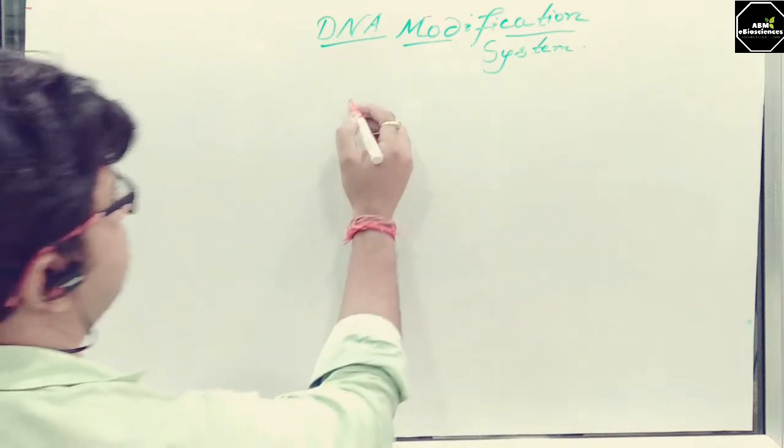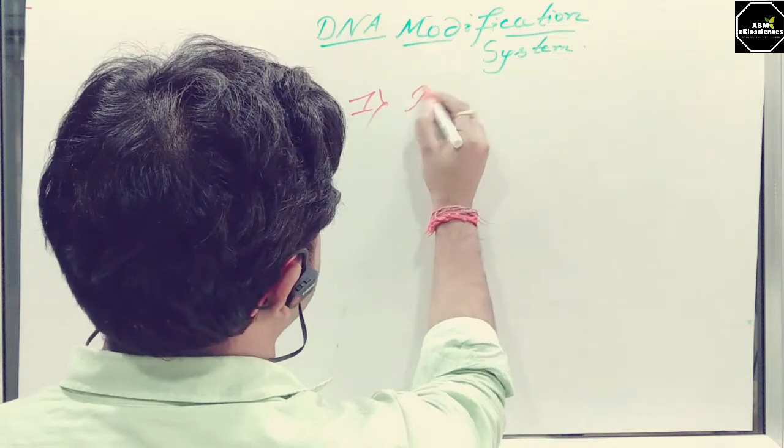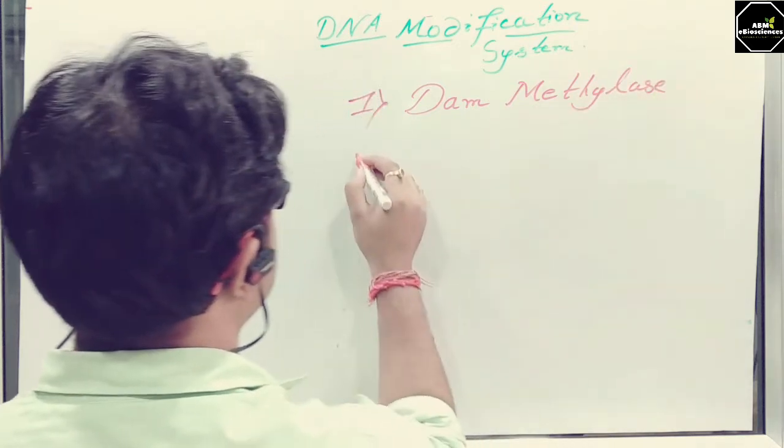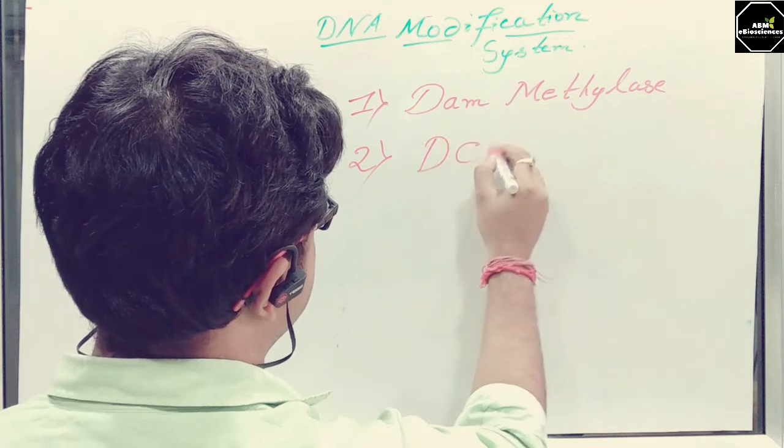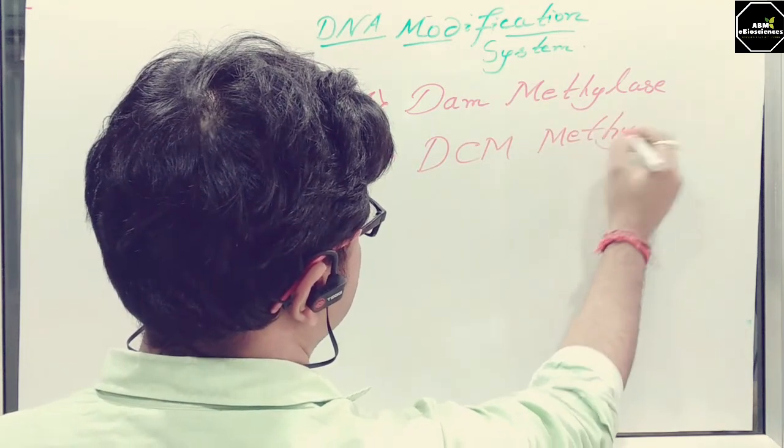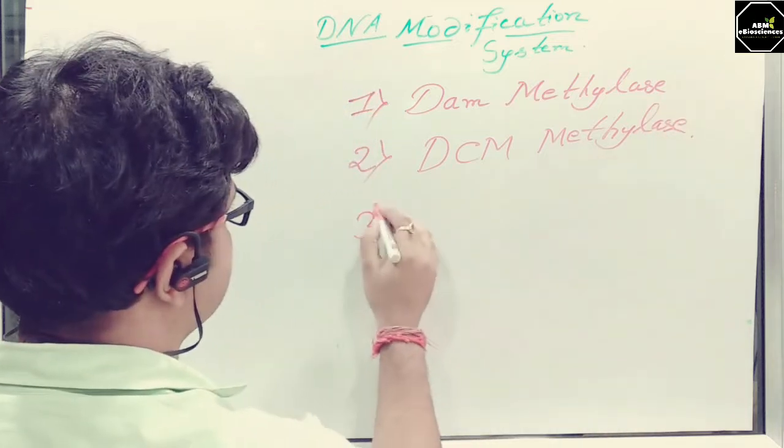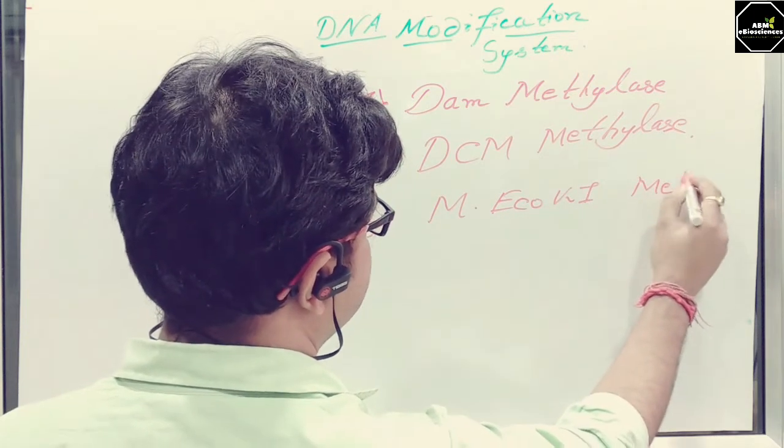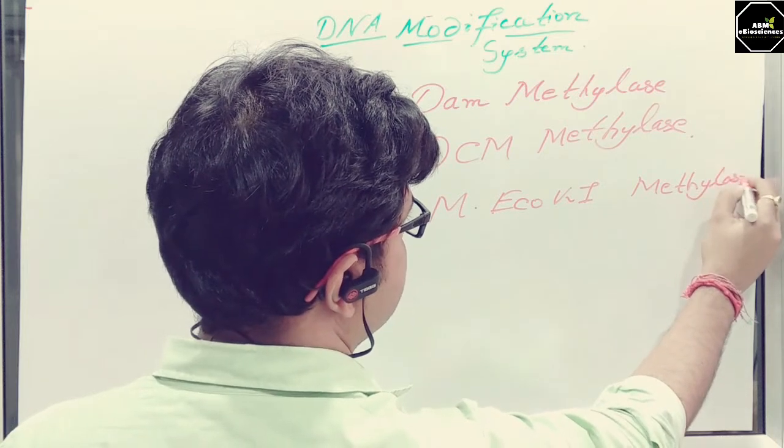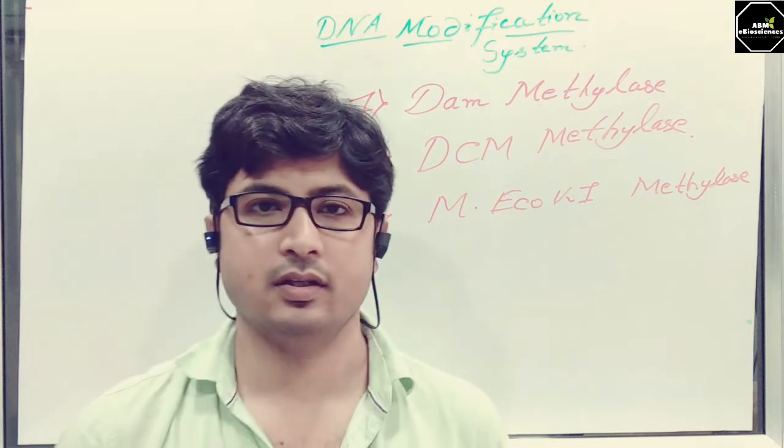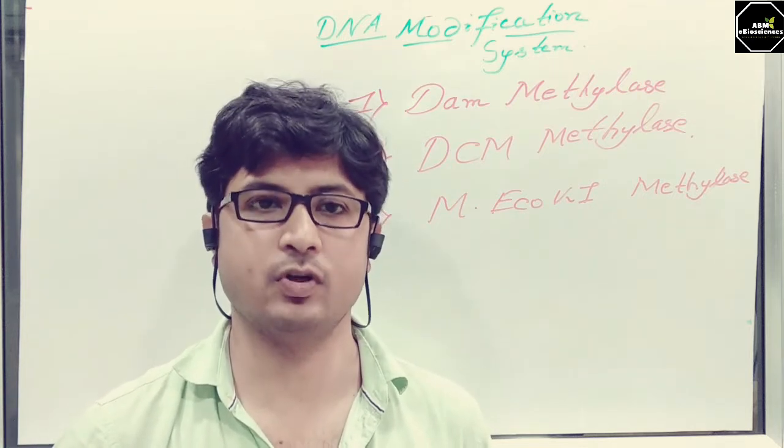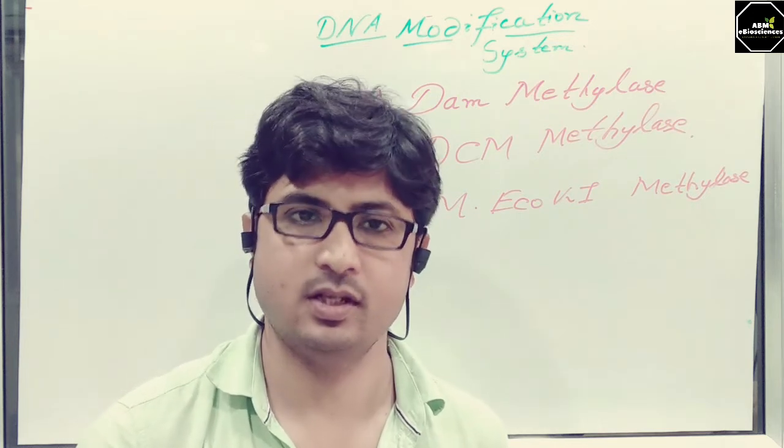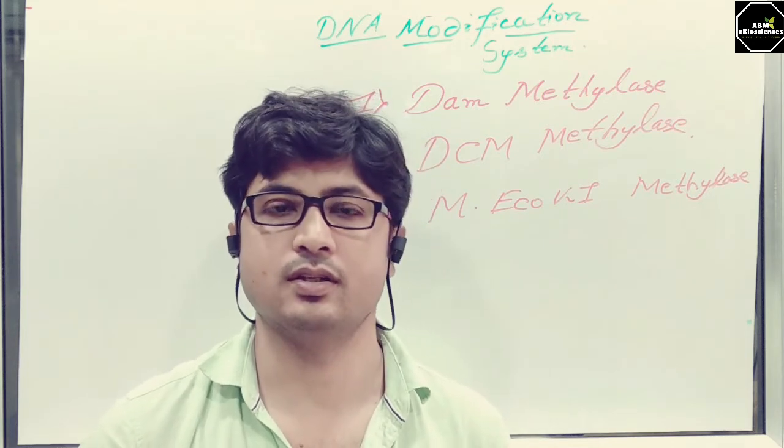First one is the DAM methylase. Second one is the DCM methylase. And the third one is the very rare M-eco-PA1 methylase. These three are the known mechanisms of methylases or modification enzymes which can modify the DNA present inside the bacteria as well as the foreign DNA which you want to insert into the bacteria.